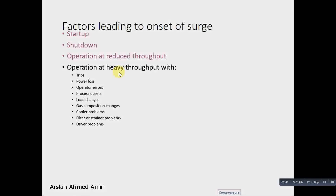As speed decreases, the discharge pressure can remain higher than suction, making reverse flow possible. Due to operator errors, process upsets, load changes, or changes in gas composition, surge can also be triggered.